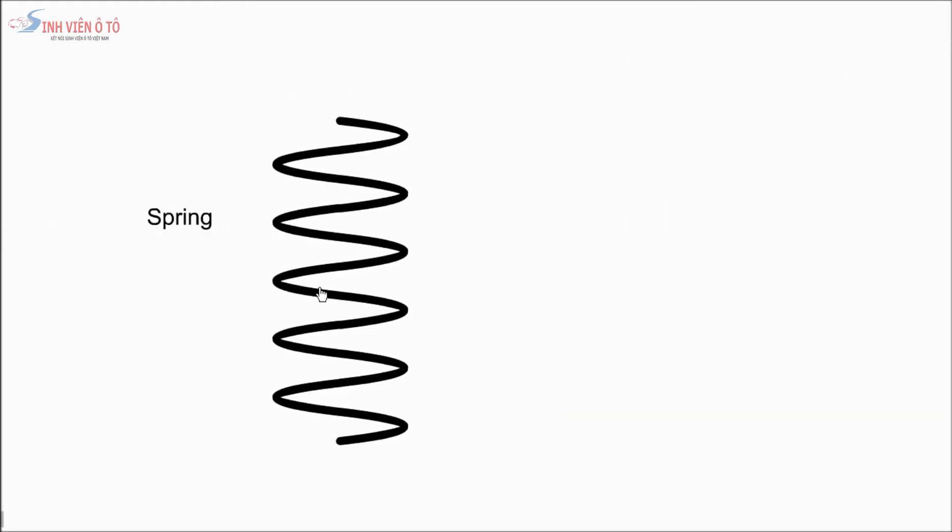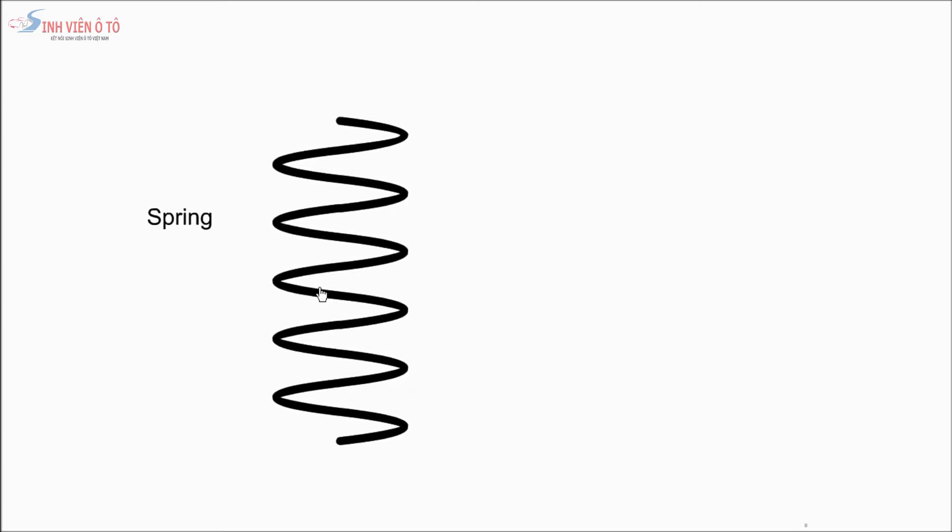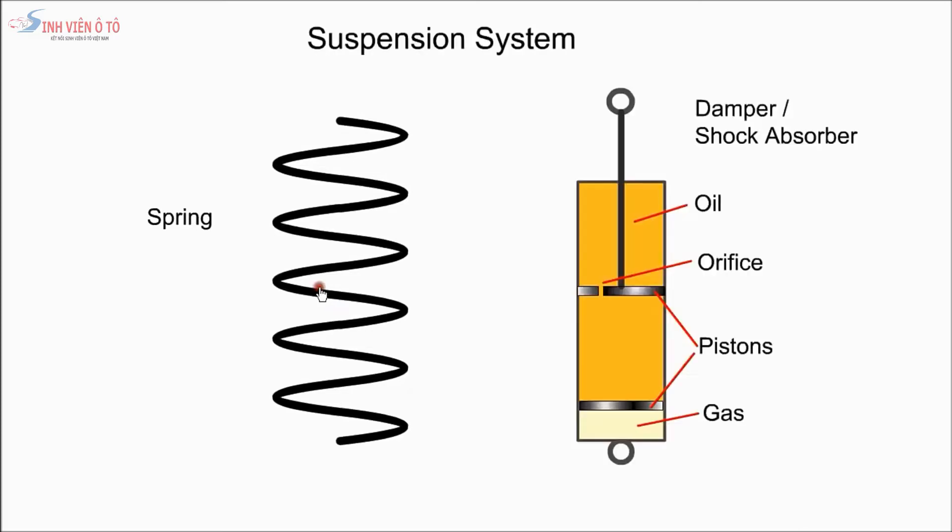Coil springs store and absorb shock energy by compressing and extending. When the wheel is pushed upwards by a bump, the spring prevents the shock from reaching the chassis and maintains the tire in contact with the road.